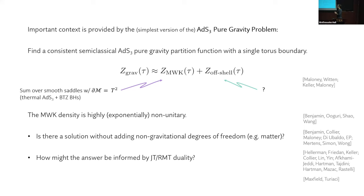So is there a solution to this problem without adding stuff? And how might the answer be informed by holographic duality in one lower dimension? Now JT gravity is dual to a random matrix ensemble, and there are two components to the right hand side of this equation. There's the random matrix and there's the ensemble.